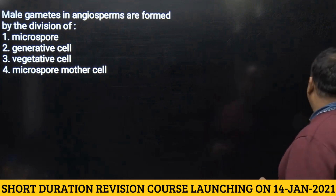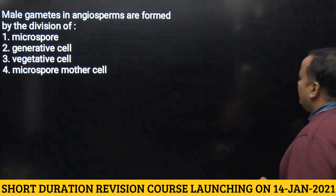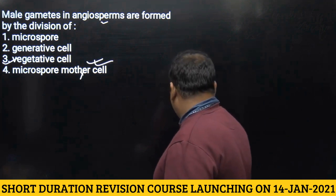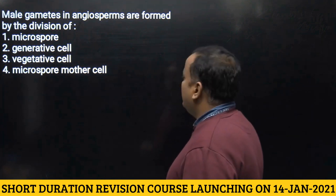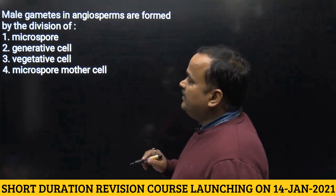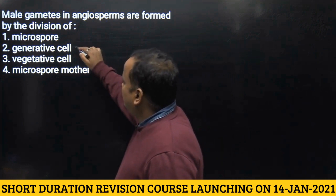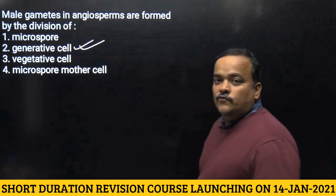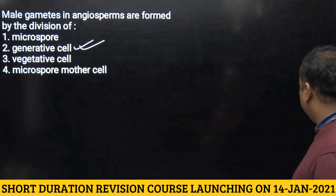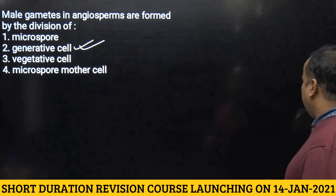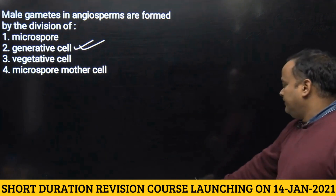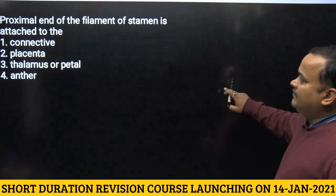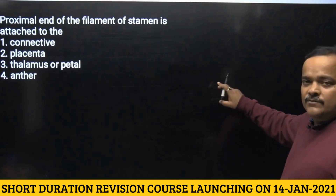The next question asks how male gametes in angiosperms are formed. Male gamete formation takes place as a result of mitotic division in the generative cell, so the answer will be the second option.